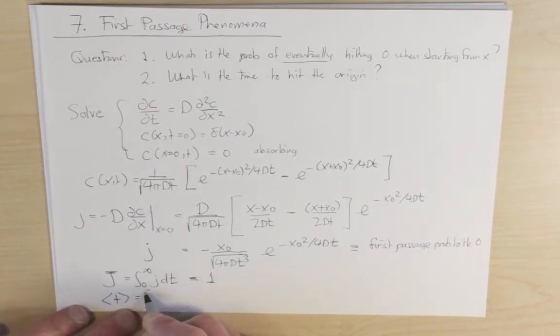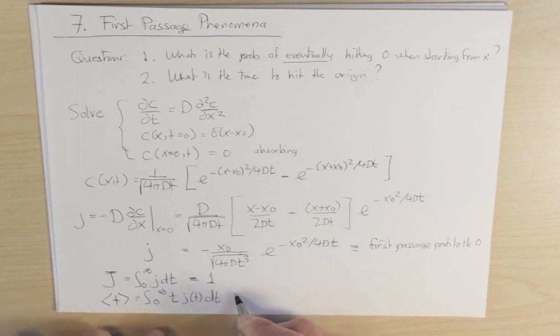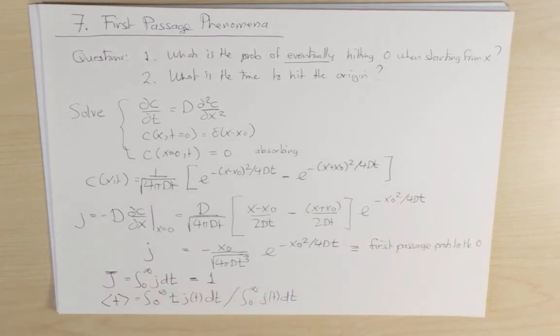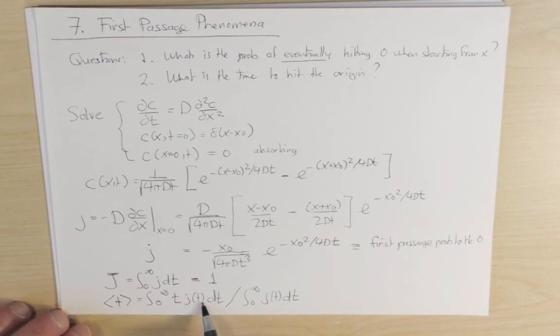And similarly, the mean time to hit the origin, which is nothing more than the integral from zero to infinity t j(t) dt divided by the integral from zero to infinity of j(t) dt. The denominator we already found was 1. But for the numerator, we have t j(t) dt. But notice that the t conspires with the t to the minus three halves here to give something which is decaying as t to the minus one half. And in the long time limit, the integral of t to the minus one half dt is infinite. So this is equal to infinity.